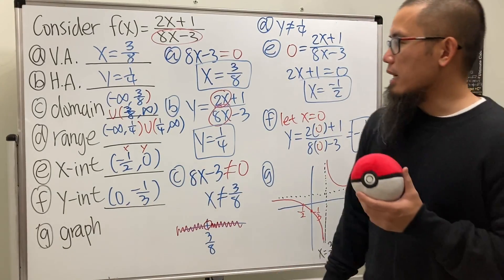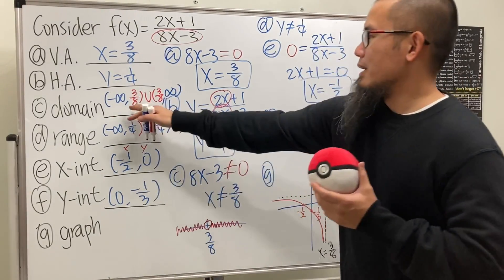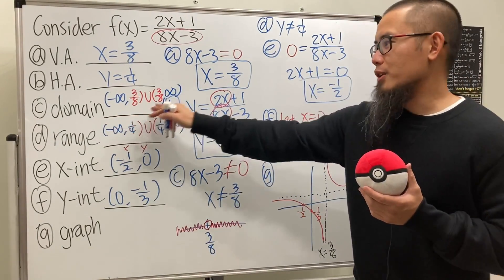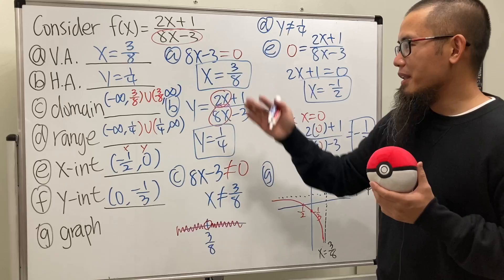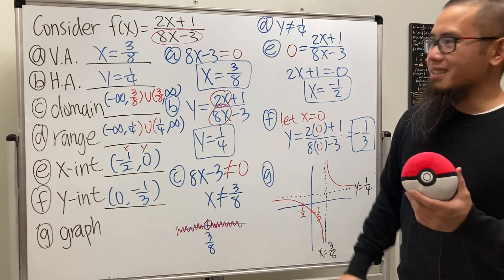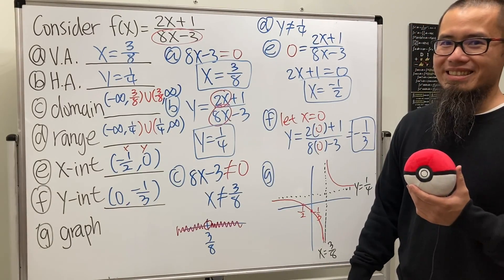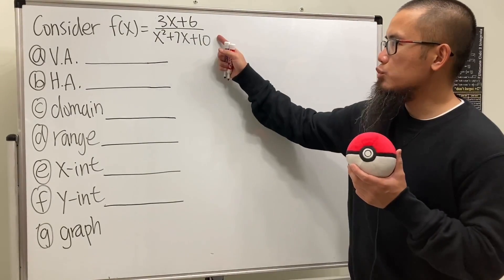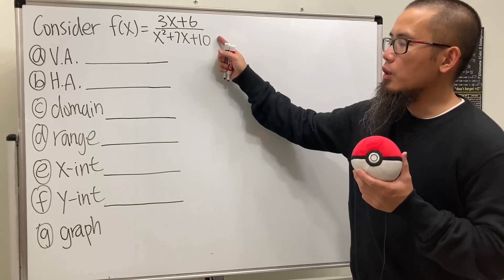So for the range, we write the interval notation on one line: negative infinity to 1 over 4, union 1 over 4 to infinity.